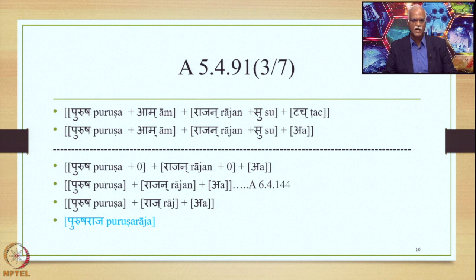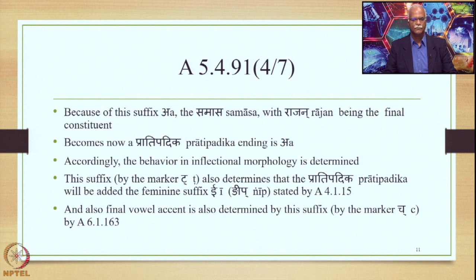Purusha Raja means Purushanam Raja — King of Men. Because of the suffix A, the Samasa with Rajan as the final constituent now becomes a Pratipadika ending in short A. Accordingly, its behaviour in inflectional morphology is determined: Purusha Rajaha, Purusha Rajao, Purusha Rajaha Prathama, and so on. All these Subanta forms.